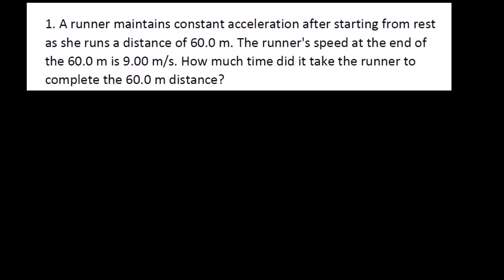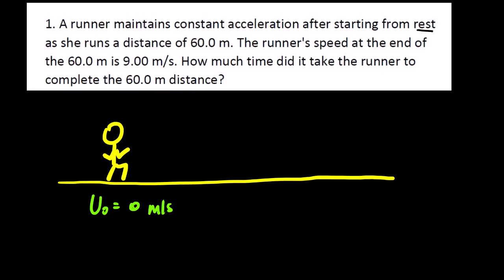A runner maintains constant acceleration after starting from rest as she runs a distance of 60.0 meters. Now before we can do anything, we can picture this. We have a runner, I'm not very good when it comes to drawing so please bear with me. We have a runner which starts from rest. This keyword simply means that we have our initial velocity as zero meters per second. Then this person will run for a distance of 60.0 meters.